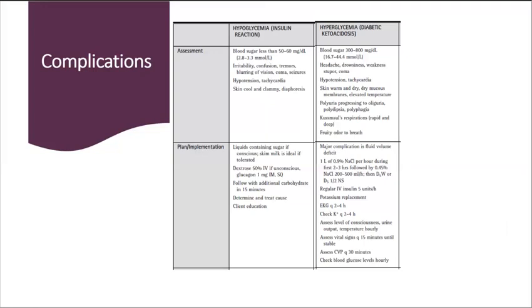Place the client on EKG monitoring every two to four hours. Check potassium levels every two to four hours. Assess the client's level of consciousness, urine output, temperature. Assess vital signs every 15 minutes until stable. Assess CVP every 30 minutes. Check blood glucose levels hourly.